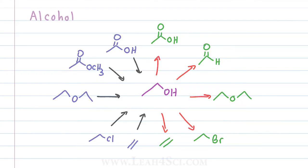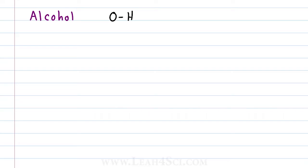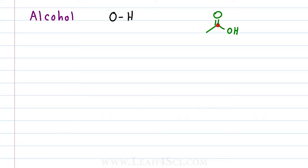Let's backtrack to the basics. When you hear alcohol, you should immediately think of an oxygen bound to a hydrogen. This is the alcohol functional group — just oxygen bound to a hydrogen. For example, if you see a molecule that has an OH on a carbon but that same carbon also has a carbonyl, that's not an alcohol. This is a carboxylic acid, which you should have studied when you looked at functional groups.